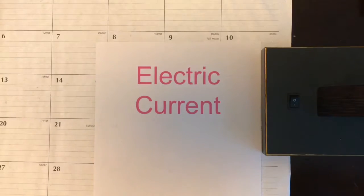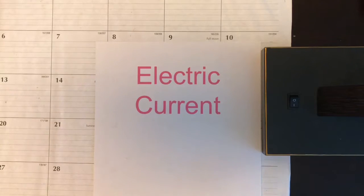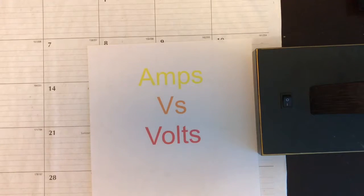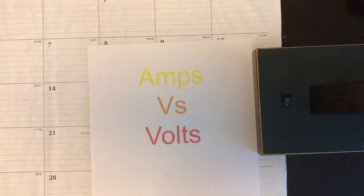So that's electric current. You may have heard the words volts or amps used to describe electric current, but you may not know what each of the terms mean. Amps are the international standard unit of measurement for the flow of current. It is simply the amount of charge that passes a given point in a second.